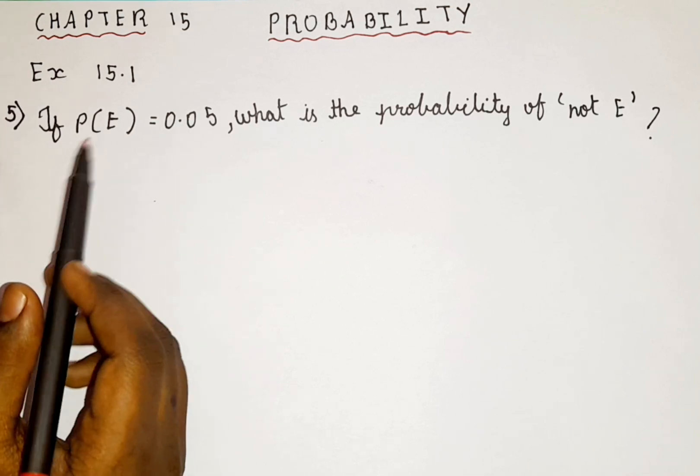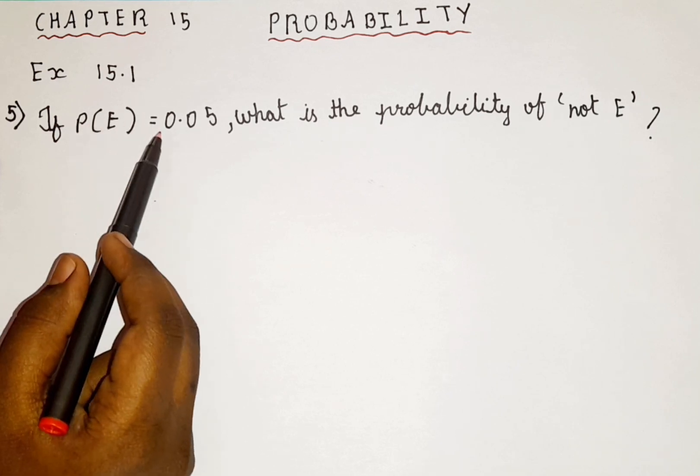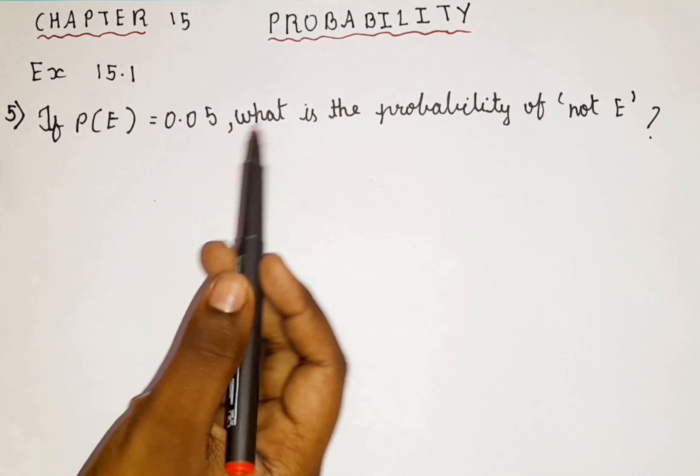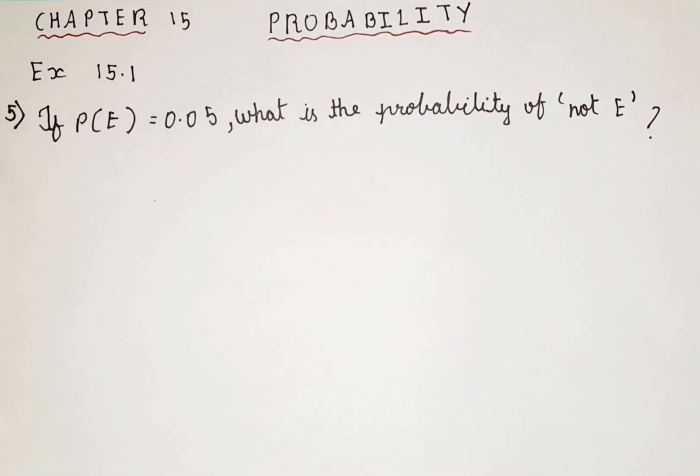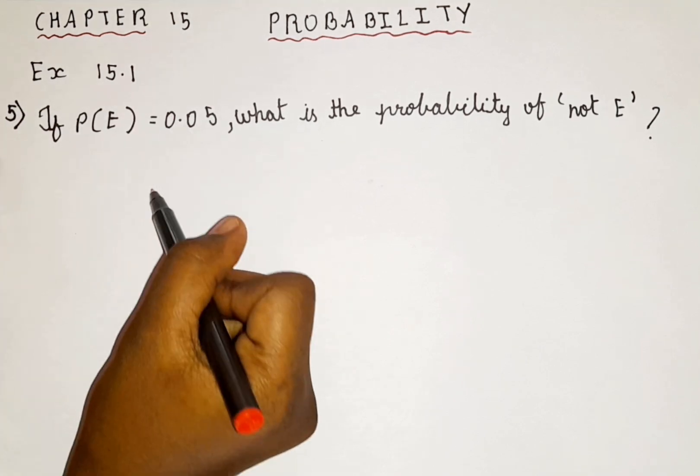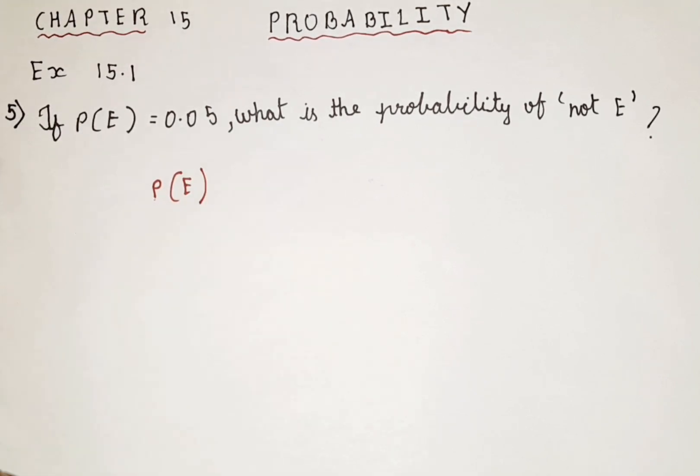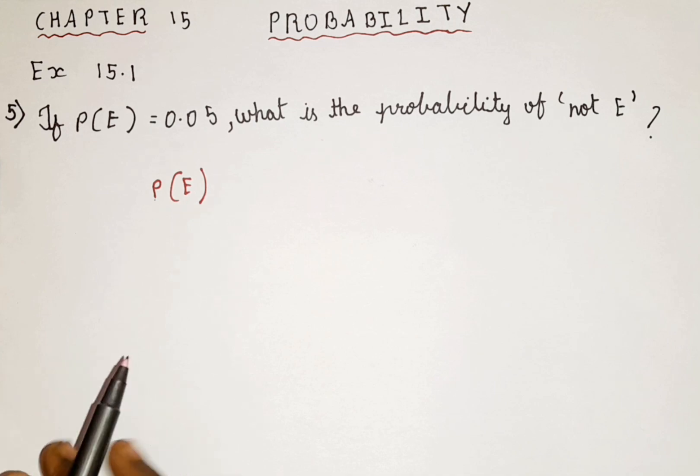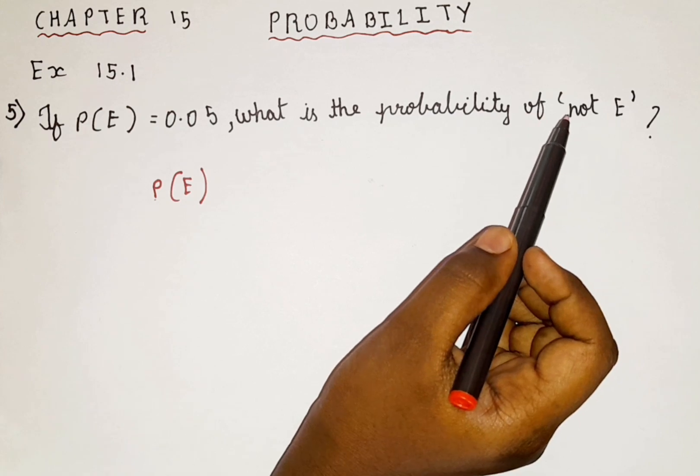Now let's read the question. If probability of an event is equal to 0.05, what is the probability of not an event? So here, the thing is a probability of an event. Probability of an event is 0.05. So the question is, what is the probability of an event that is not happening?